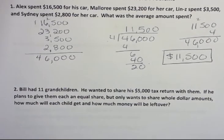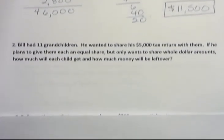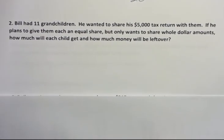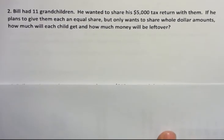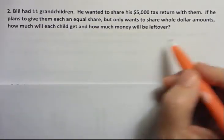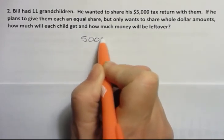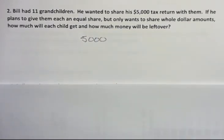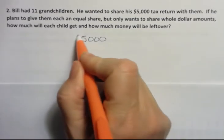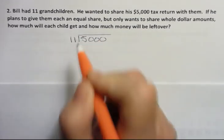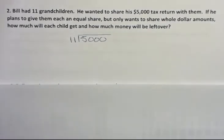Let's look at the next one. Bill had 11 grandchildren. He wanted to share his $500 tax return with them. If he plans to give them each an equal share but only wants to share whole dollar amounts, how much will each child get and how much money will be left over? We're going to divide that money amongst his grandchildren, so that's a division. We're going to divide by 11.